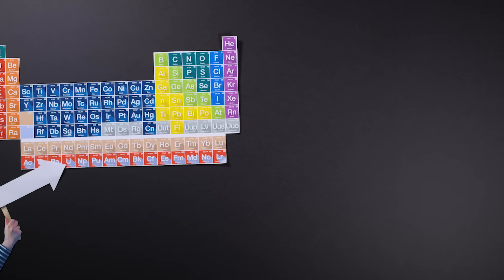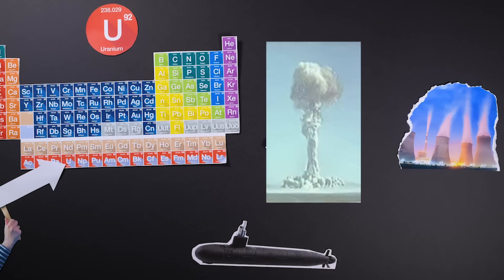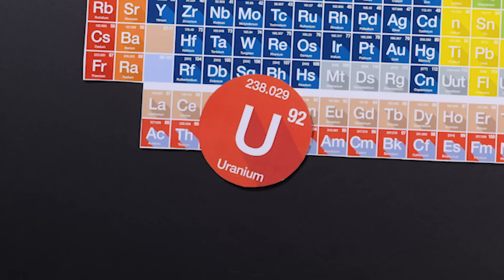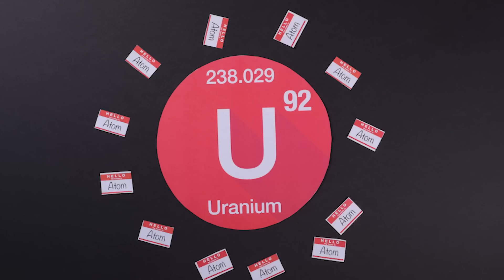We've all probably heard of uranium before. You can tell from its spot at the bottom of the Periodic Table that it's a very large atom. And because it's so big, it can bond with up to 12 other atoms.